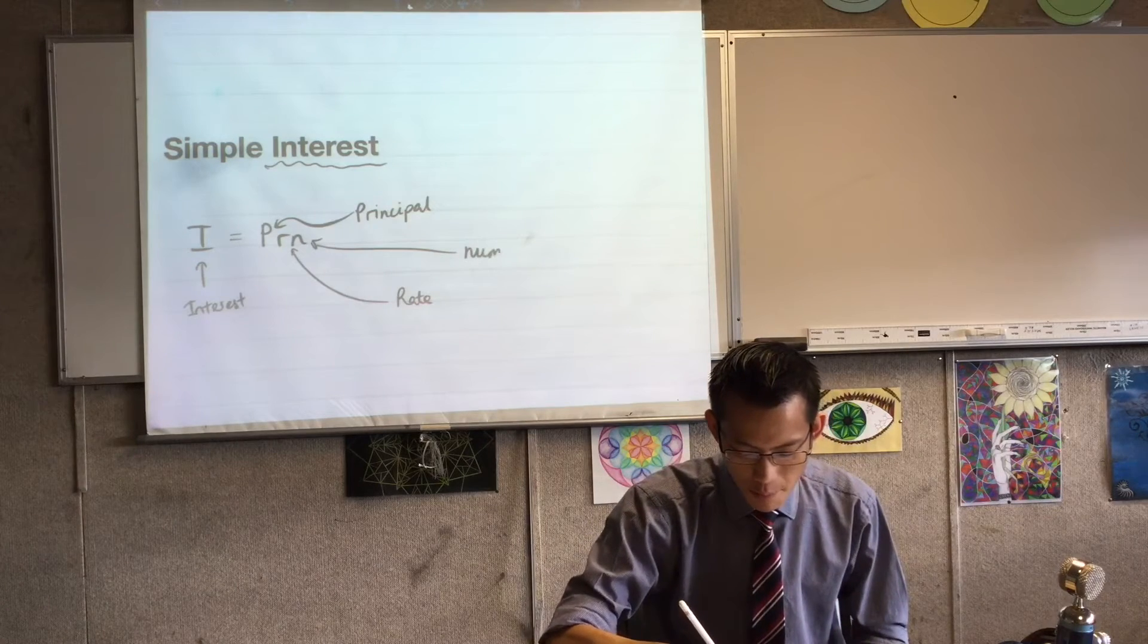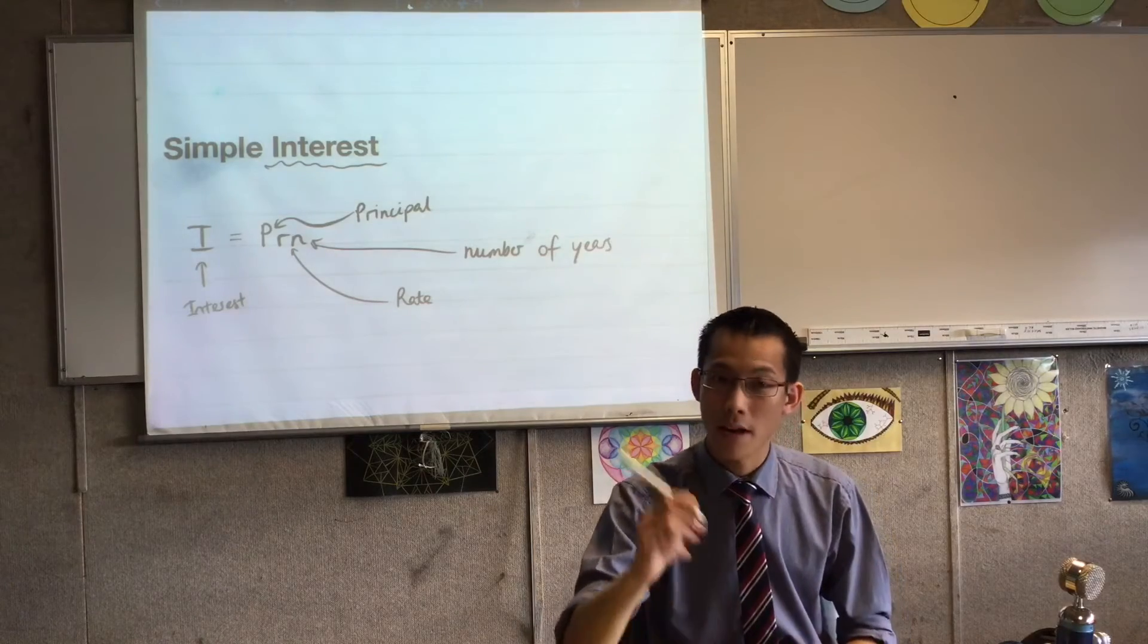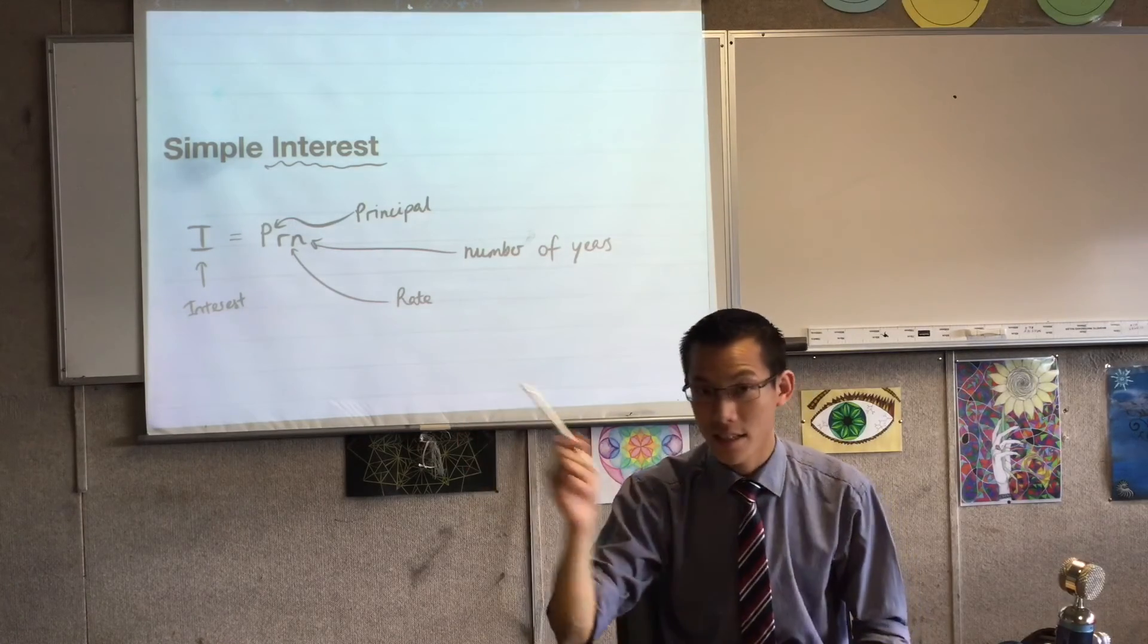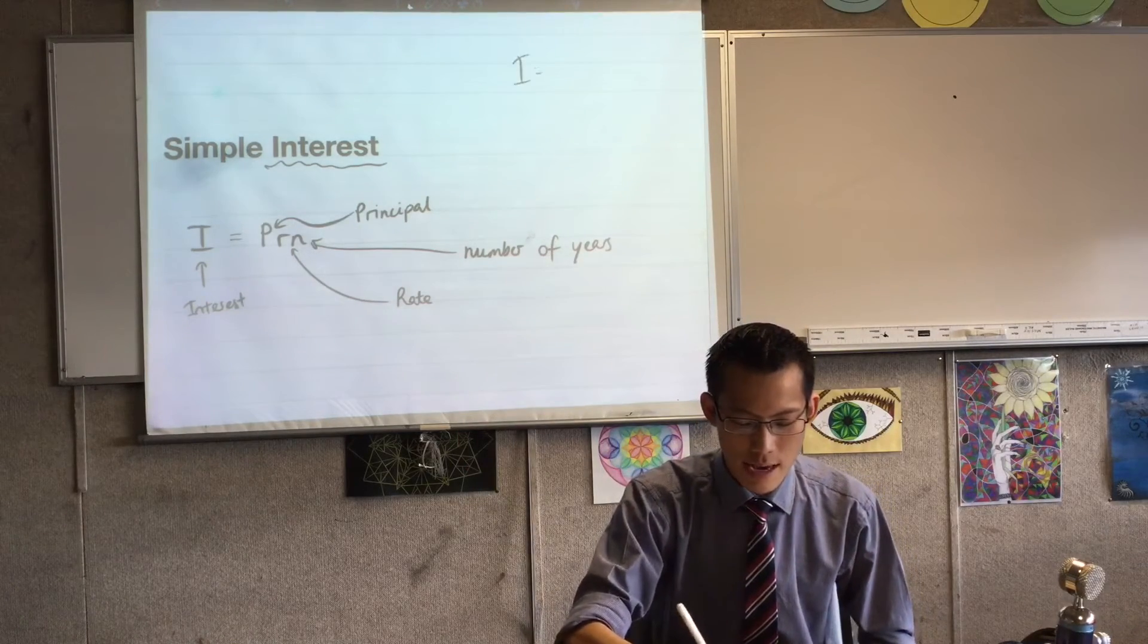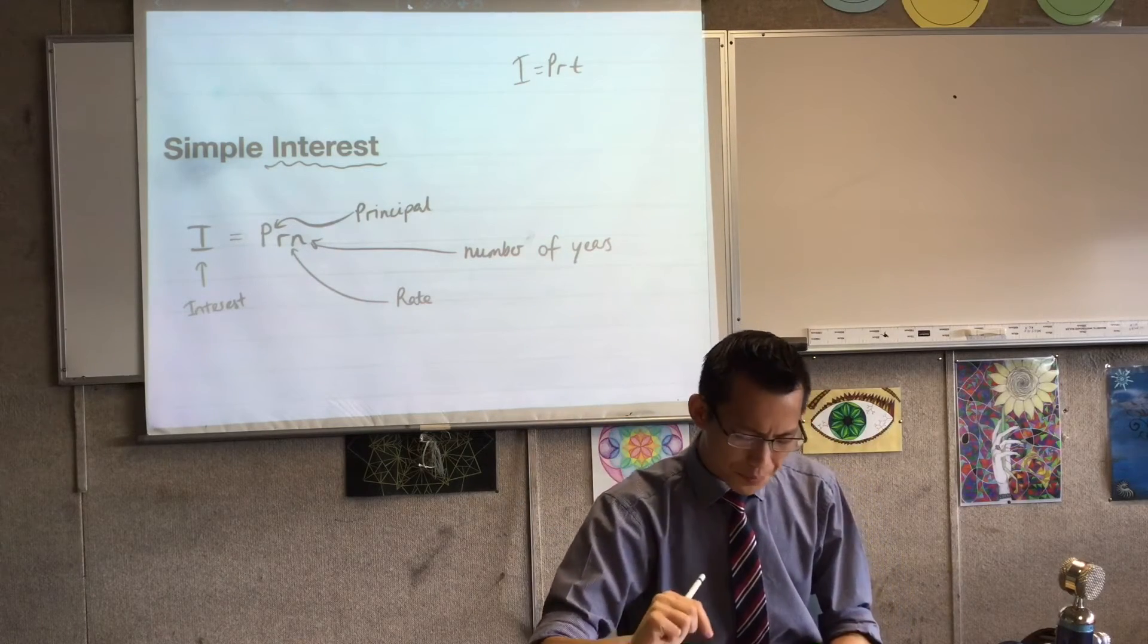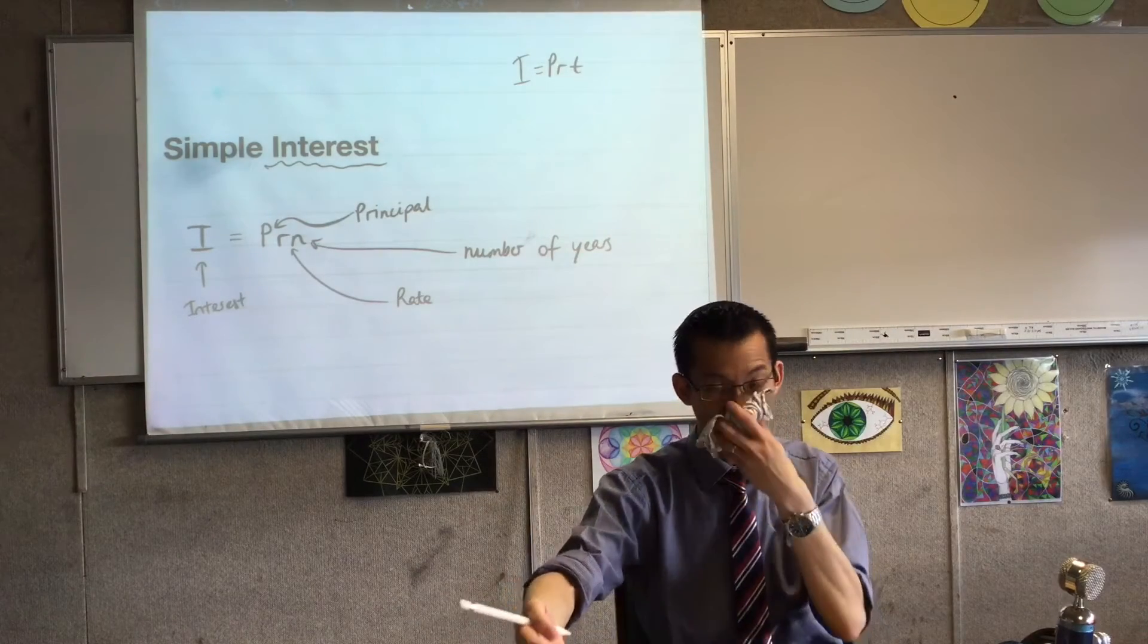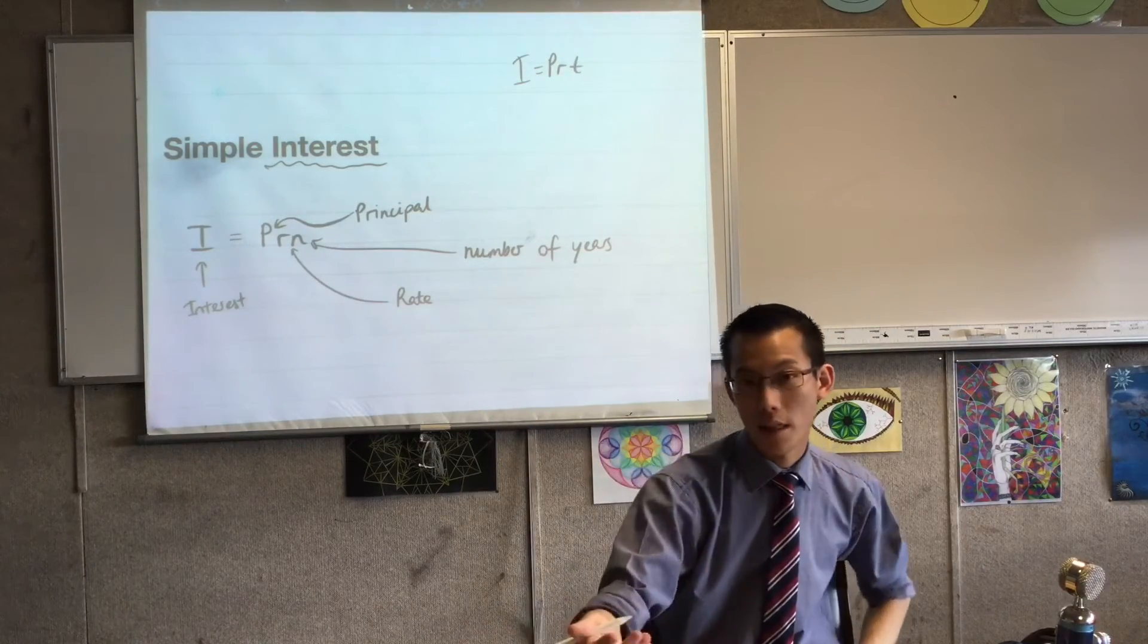And lastly, N stands for the number of years. You might also see this formula written, rather than I equals PRN, sometimes you'll see it written as I equals PRT, and the T stands for time, right. So all they mean is what's the number, like how long are you giving your money or borrowing this money from this other person?